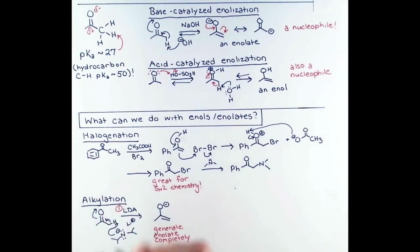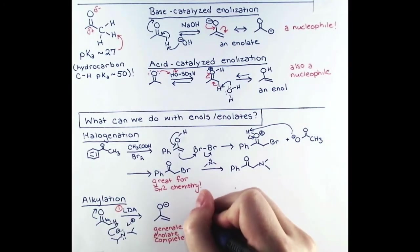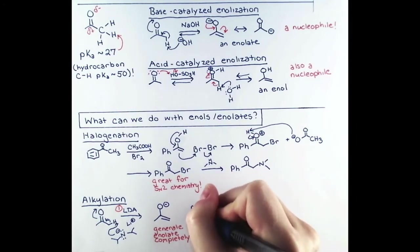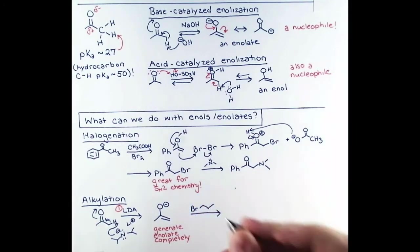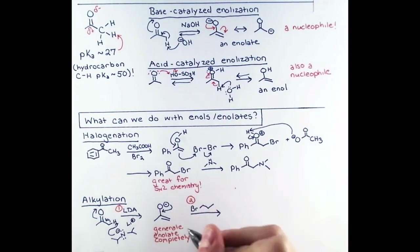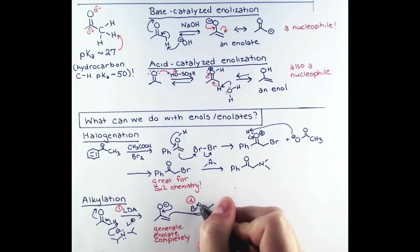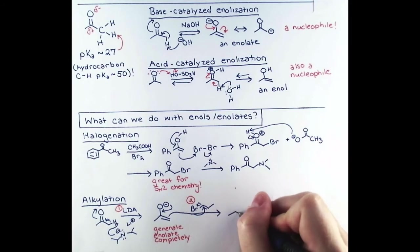Now, in a second step, we can add in the alkyl halide. Since we used up all of our LDA, we don't have to worry about our base reacting with the bromide. The enolate attacks at the electropositive carbon next to the bromide leaving group, and our final molecule extends our carbon chain by three carbon atoms.